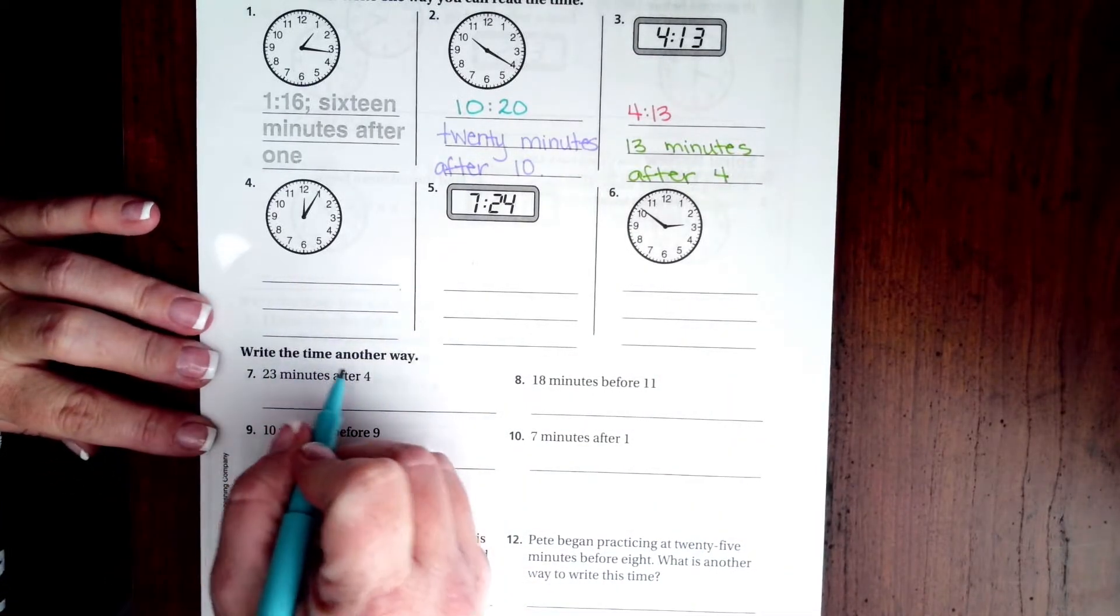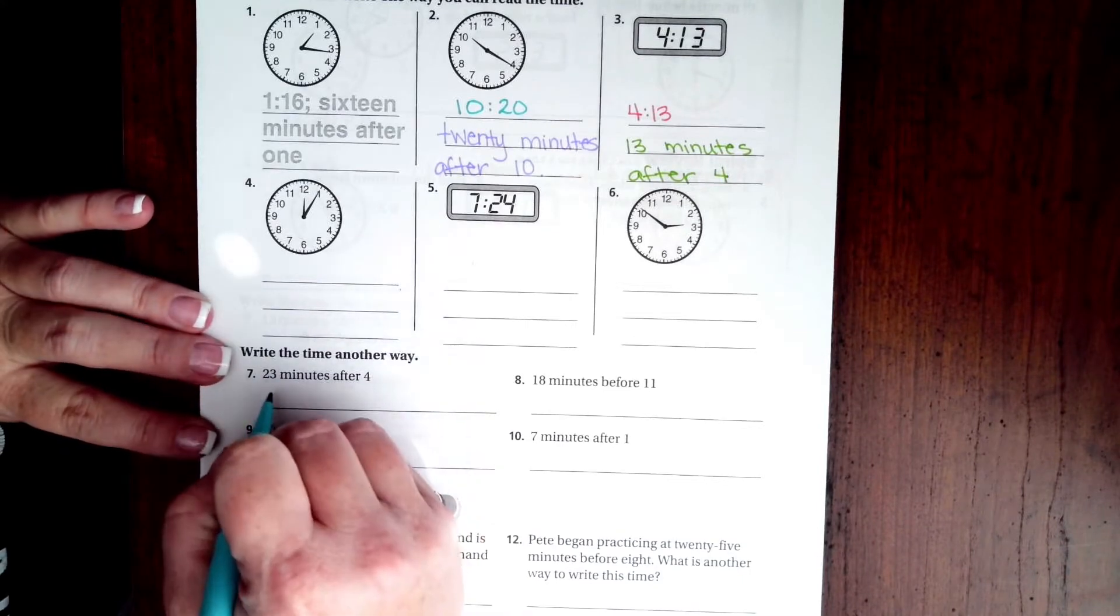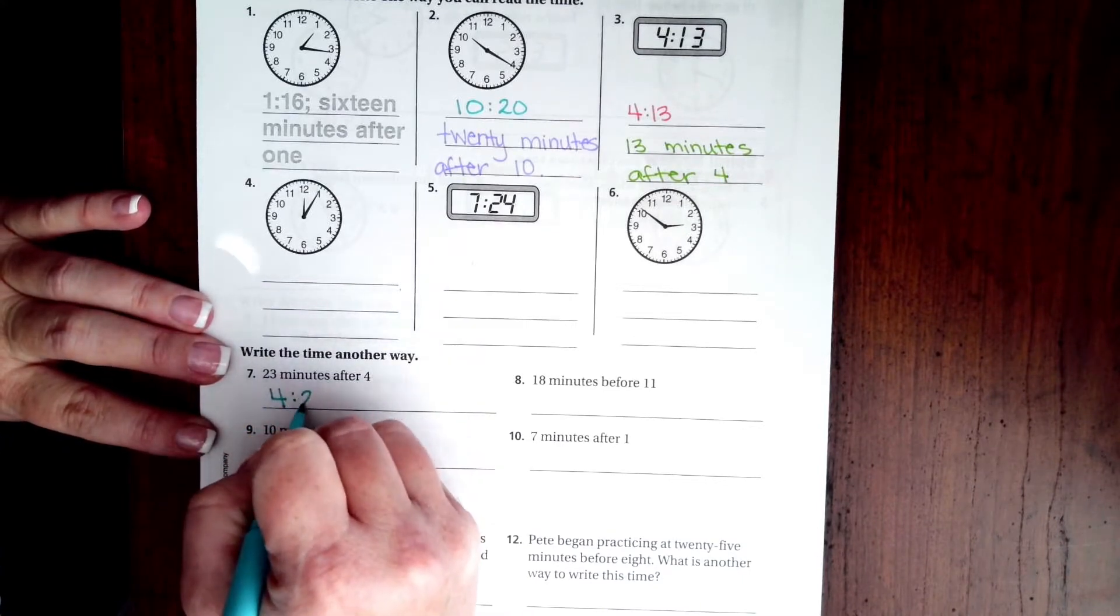Now we're going to write the time another way. It says 23 minutes after 4, well that would just be 4:23. That's it guys.